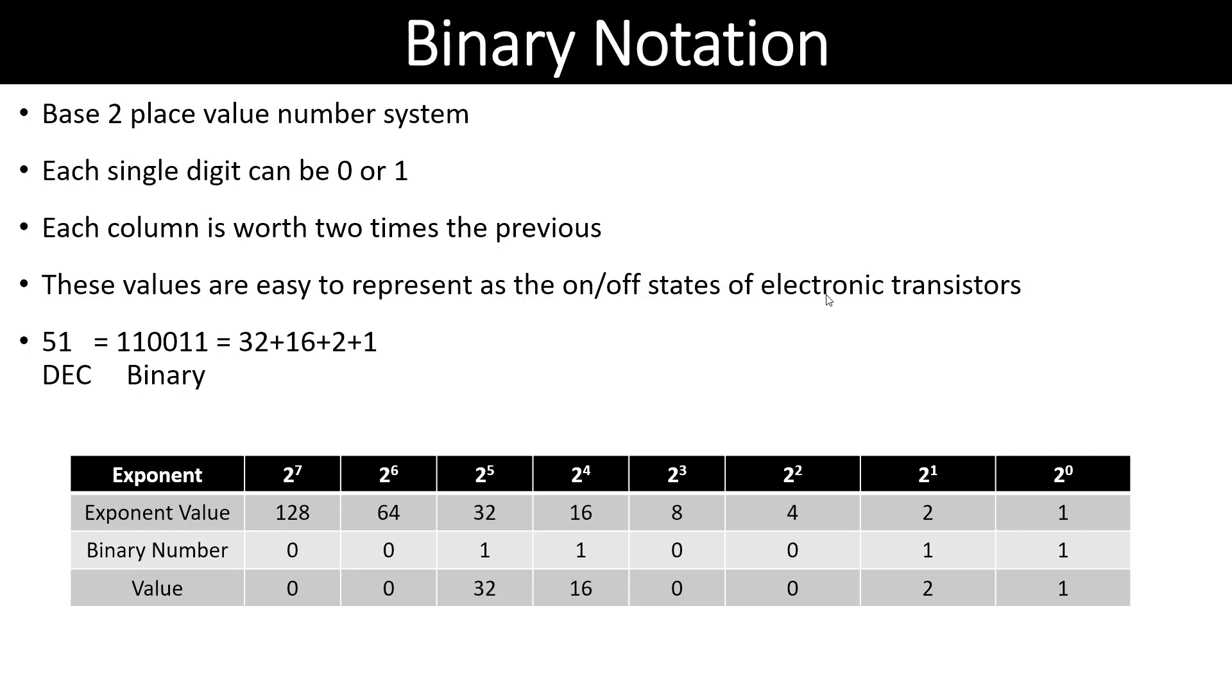In this example, we're taking the number 51 and finding its binary representation. Just like we did with decimals, we start at the top where we have 2 to the 0, 2 to the 1, all the way to 2 to the 7th. We have the base 2 and the exponents, and underneath I put what the exponent value is, so 2 to the 0 is 1, all the way to 2 to the 7th is 128.